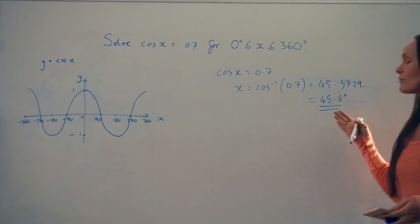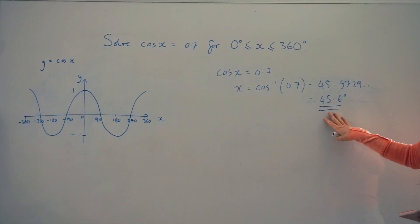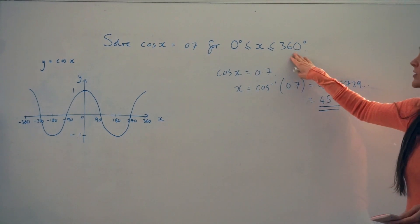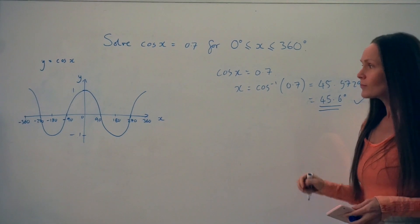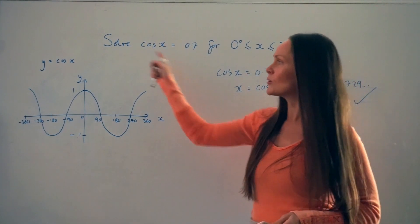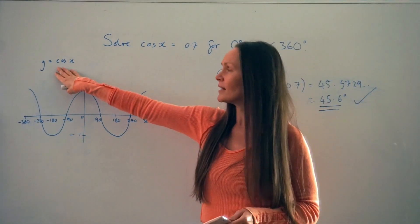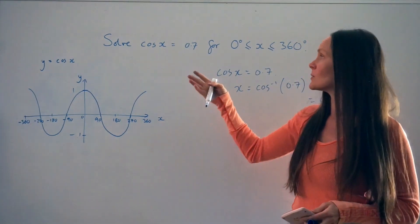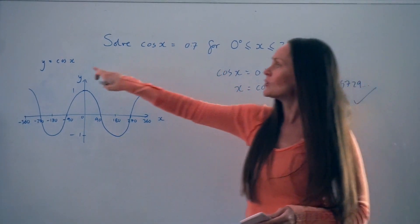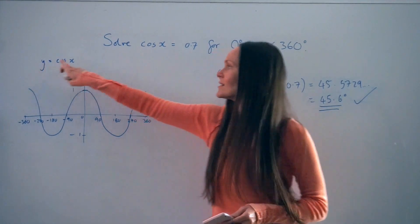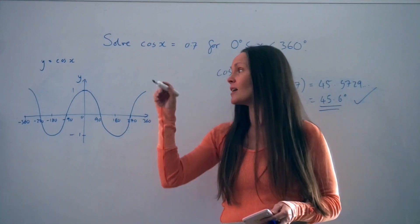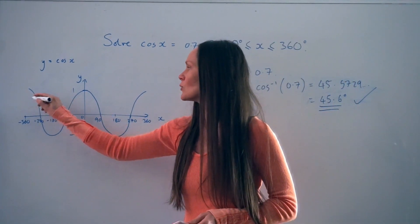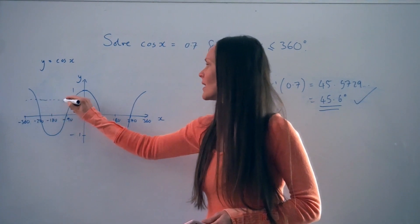If we check our range of values at the beginning of the question, this value 45.6 falls between 0 and 360, so it's an acceptable solution — we've probably picked up a mark here already. To find the other solutions, consider the graph. The equation cos x equals 0.7 means y has been replaced with 0.7, so a good idea is to draw a dashed line showing y equals 0.7 on your graph.